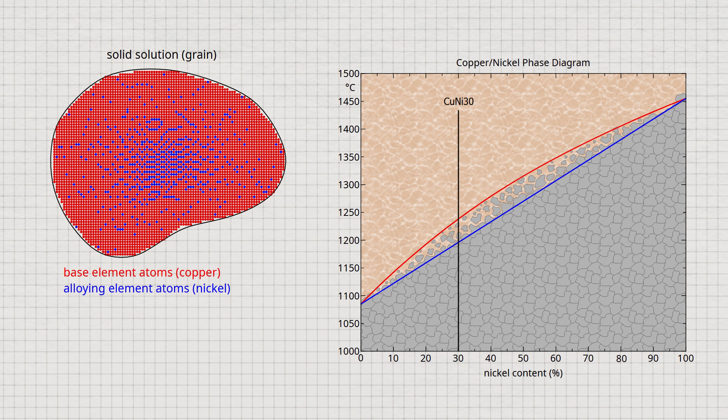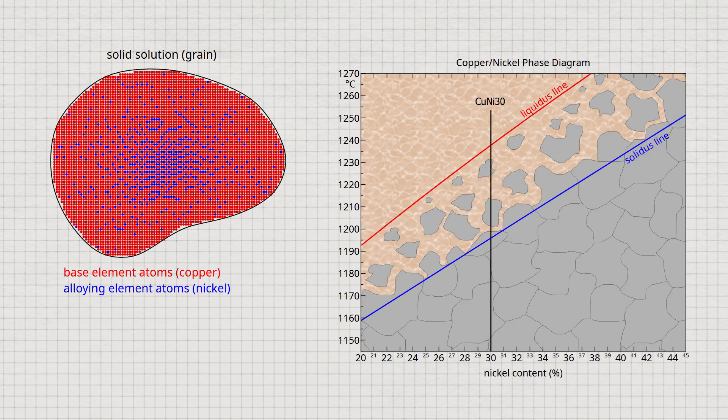For clarity, we enlarge the relevant part of the phase diagram where solidification takes place. While above the liquidus line in the area marked in red, the alloy is initially completely liquid.